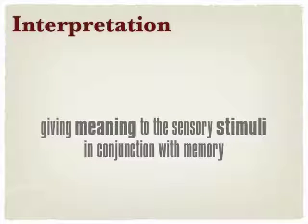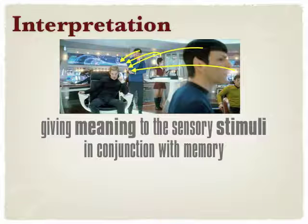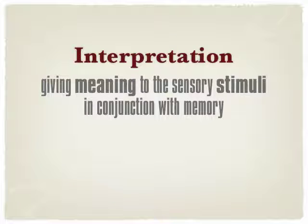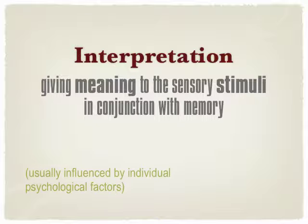After organisation we have interpretation. This is the final step where we give meaning to the sensory stimuli in conjunction with memory. It's about putting it all together and coming up with an idea of what we're seeing — what all those different light energies from the outside environment actually mean. Interpretation gives meaning to the sensory stimuli, usually influenced by individual psychological factors or perceptual sets such as past experience and potentially also context.